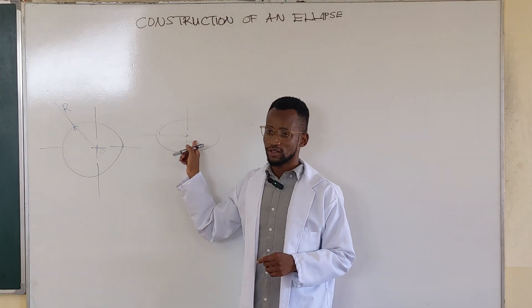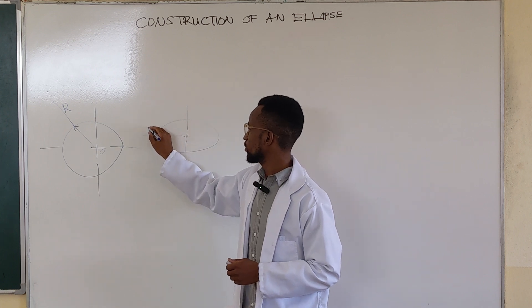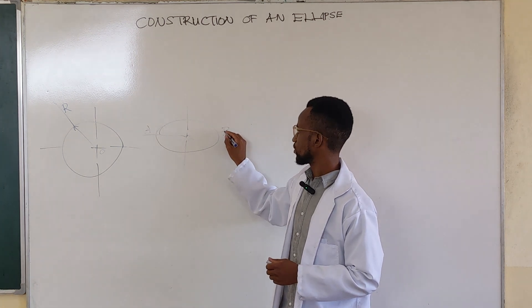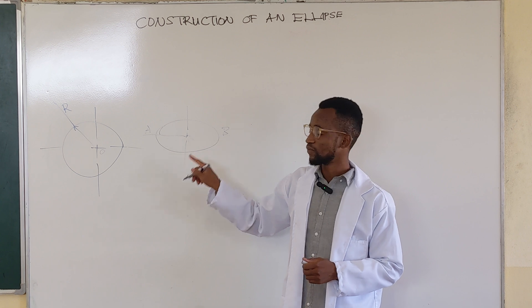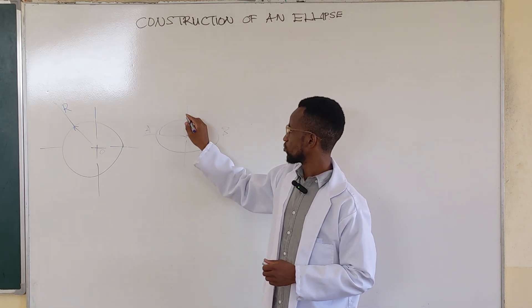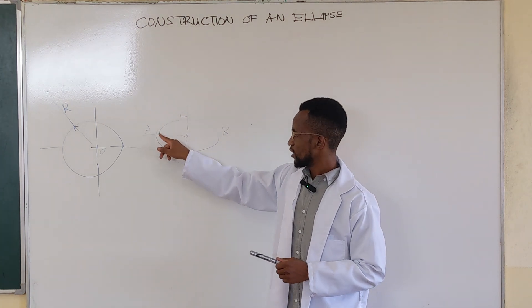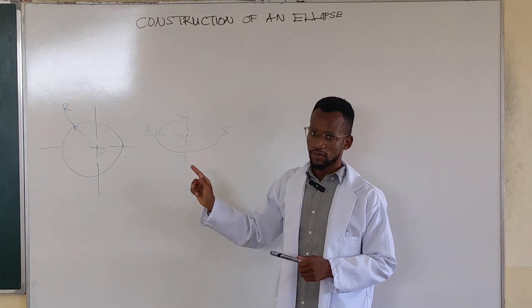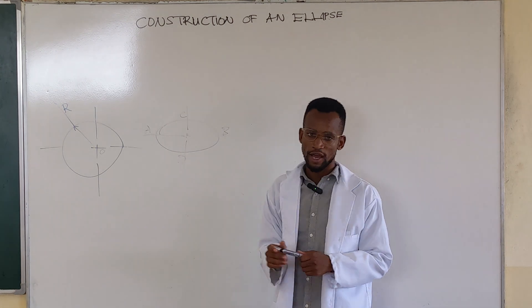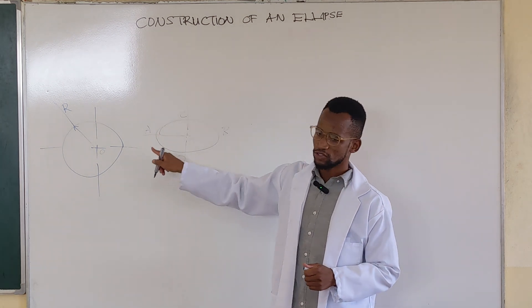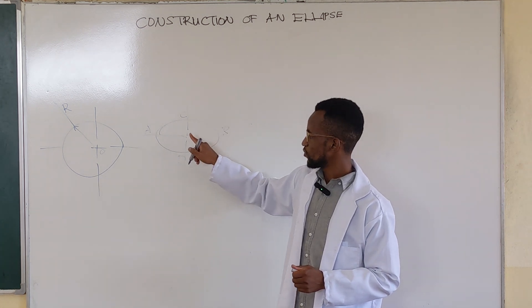When you come to the ellipse, the distance from center O to point A and that point there — the distance from this point to that point will equal the distance from this point to that point. But it will not be equal to the distance from this point to that other point. This distance and that distance are equal.